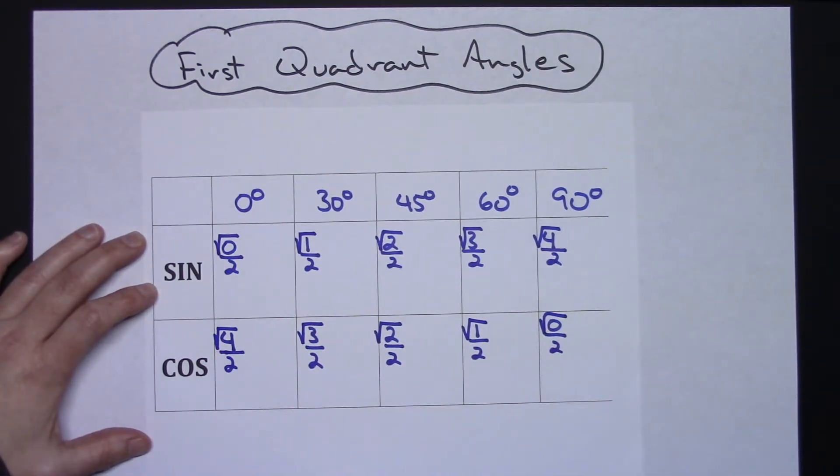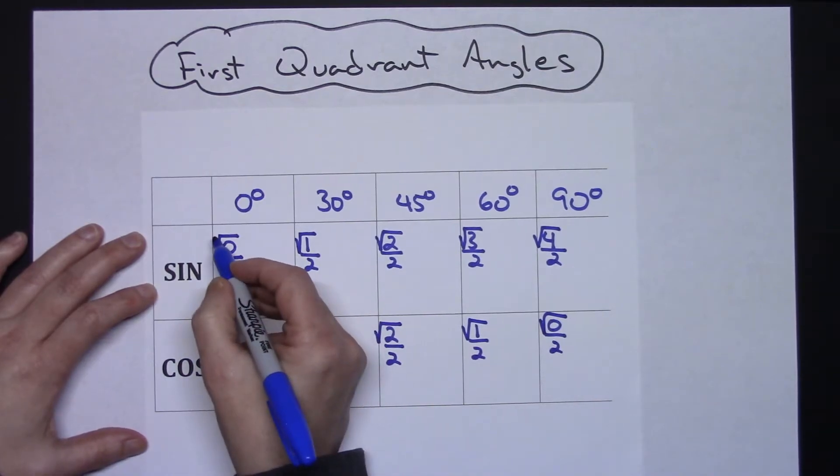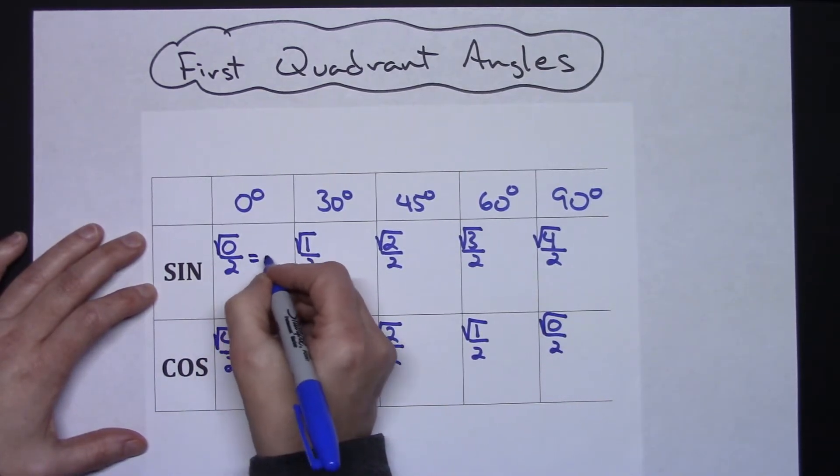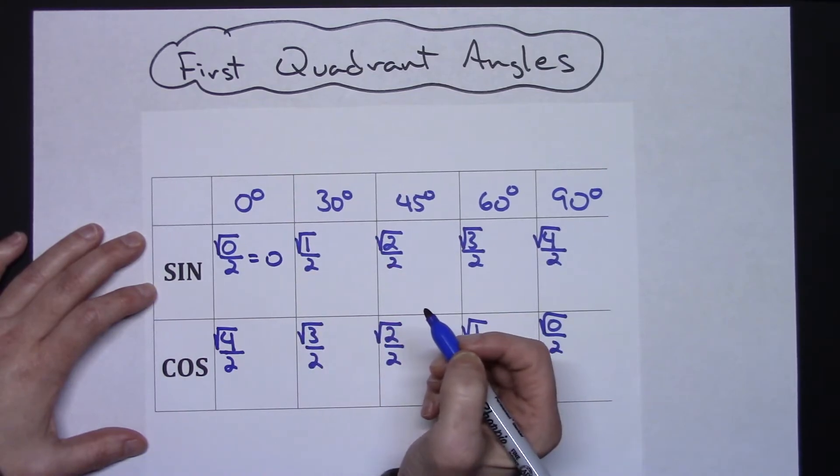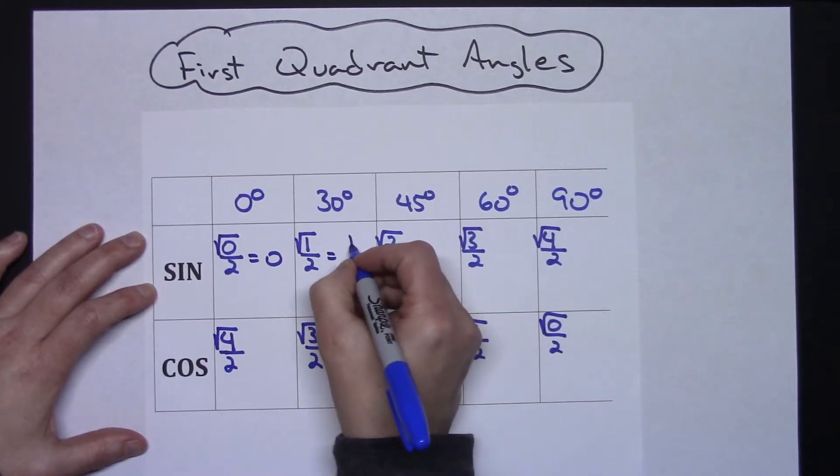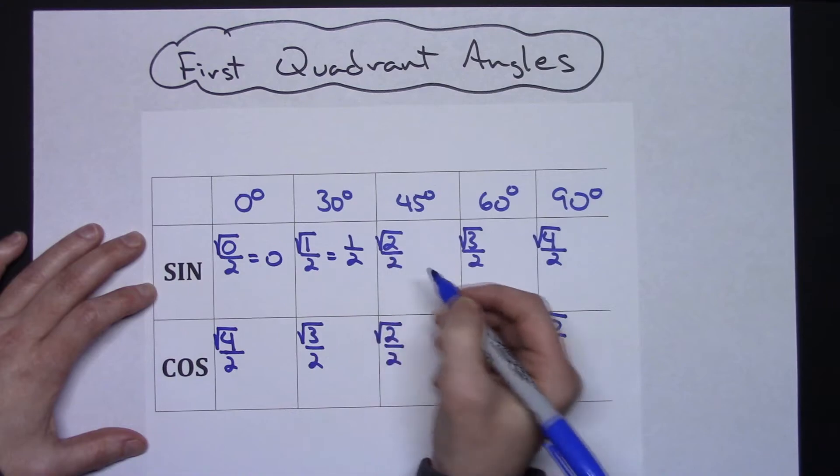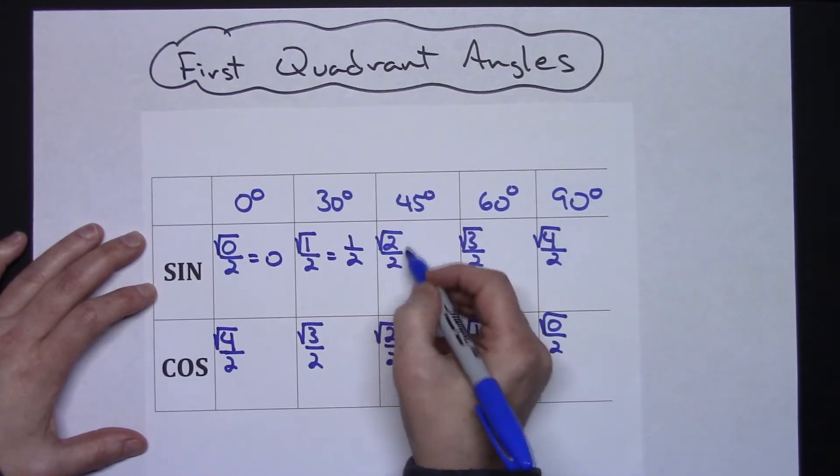And then you're going to go through and simplify if you can. Square root of zero is zero, zero divided by two is zero. Square root of one is one over two, just going to give me one-half. Square root of two I can't simplify, so I'm just going to leave it, square root two over two.